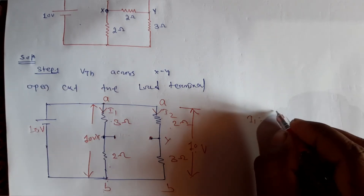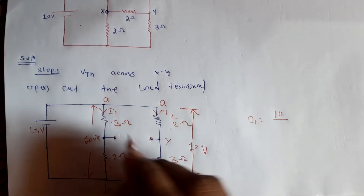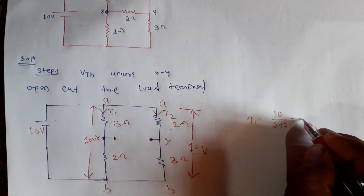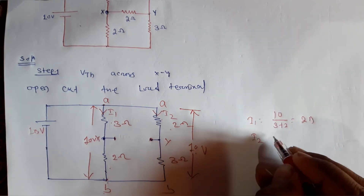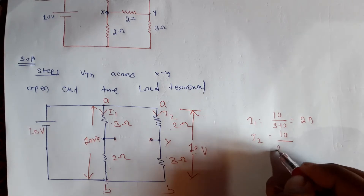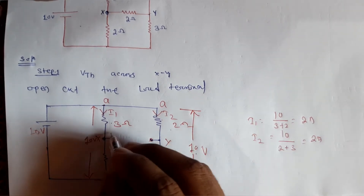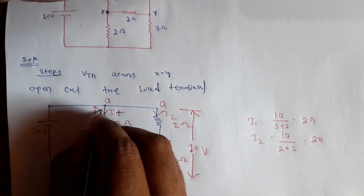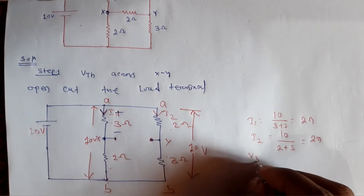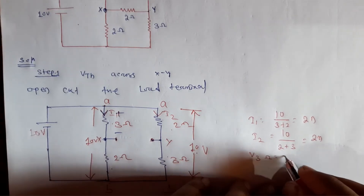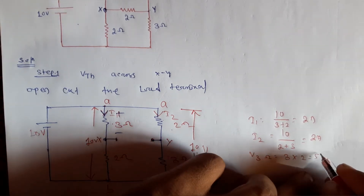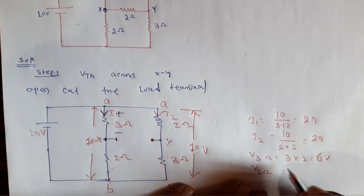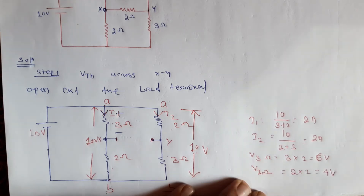The current i1 equals 10 divided by (3 plus 2) = 2 ampere. Similarly, i2 equals 10 divided by (2 plus 3) = 2 ampere. The voltage drop across 3 ohm is 3 × 2 = 6 volts, and the voltage drop across 2 ohm is 2 × 2 = 4 volts.